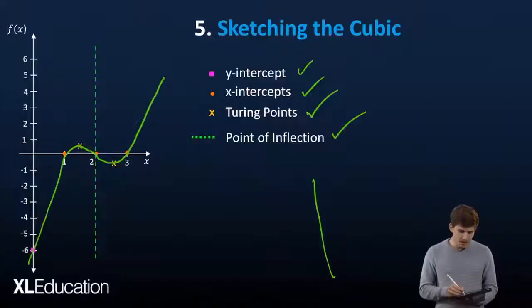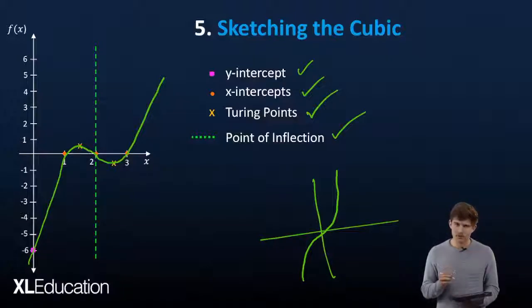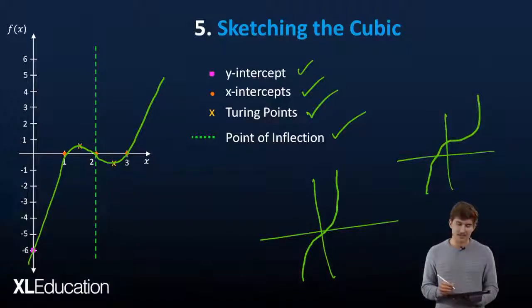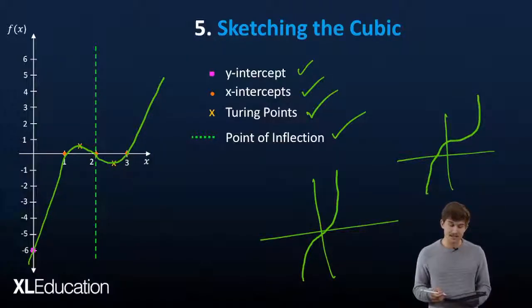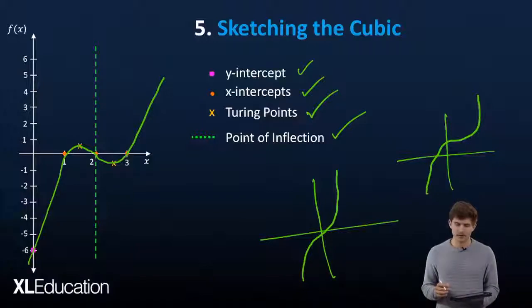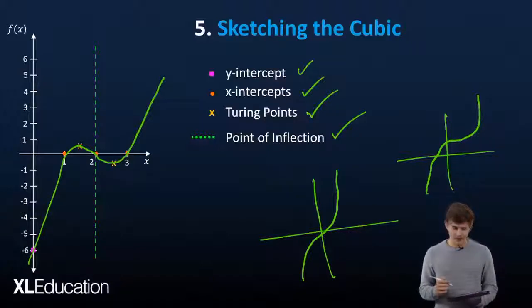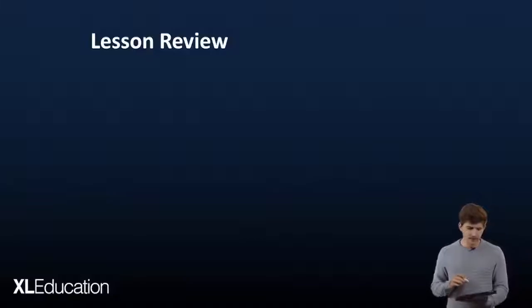A few catches to be aware of: a cubic function can also look like one where there's just a single x-intercept rather than three. Another possibility is a curve where there are no visible turning points and just a singular x-intercept, with the others being lifted off the curve. Keep these variations in mind as you work.